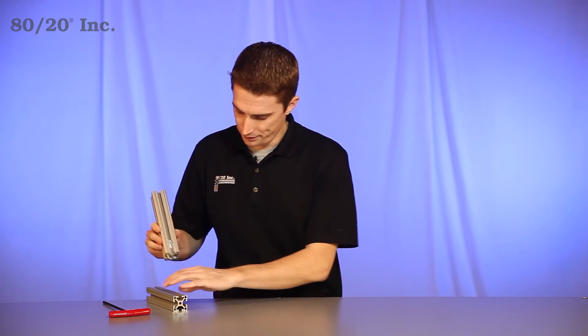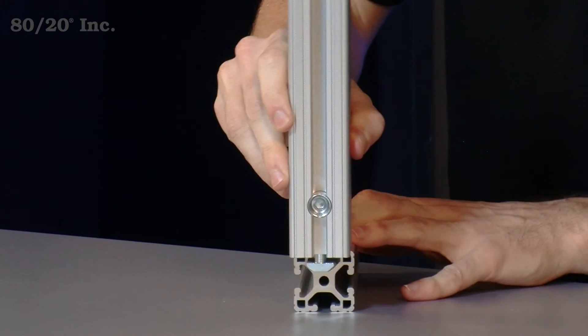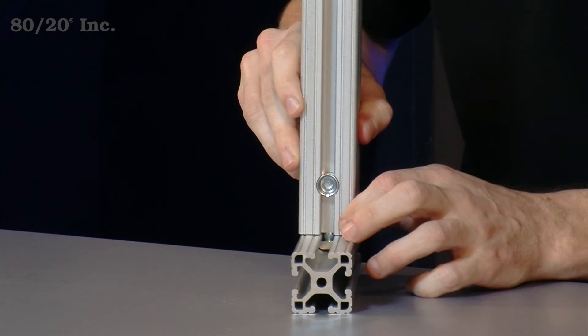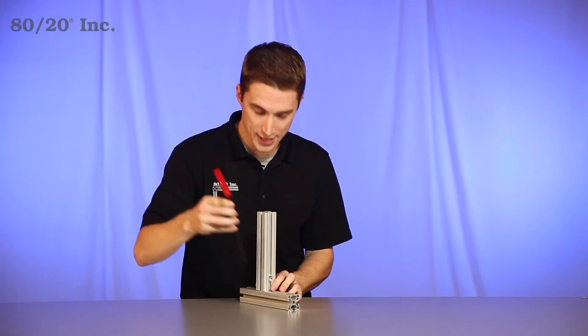From there we'll take the other bar and slide the connector in, find our desired location, and tighten down with our wrench.